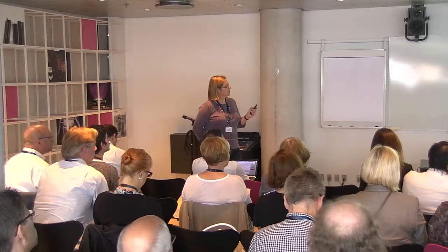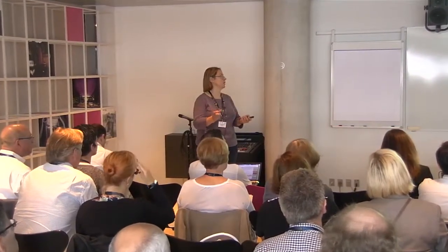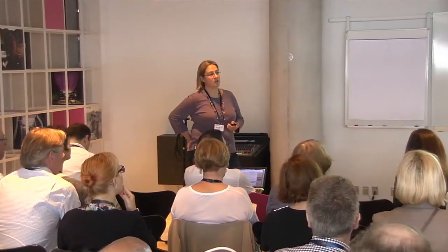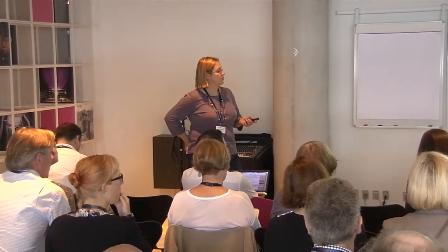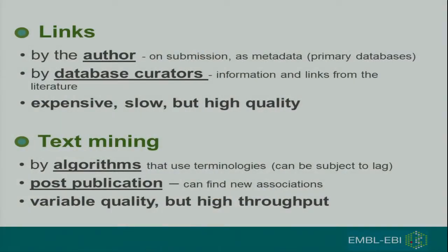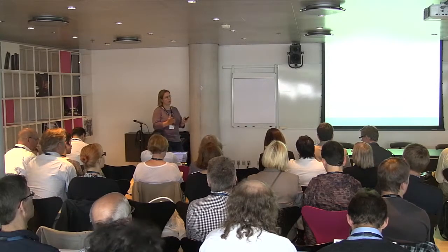The second method is text mining, done by algorithms based on dictionaries or terminologies — basically looking in the full text for those terms. The good news is it's very fast and you can get through millions of articles; the bad news is that quality is variable depending on how good the algorithm and how up-to-date the dictionary is, and you can get quite a lot of false positives. The other good news is that because it's post-publication, you can sometimes find new associations that the individual authors weren't thinking about when writing their paper.